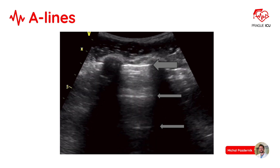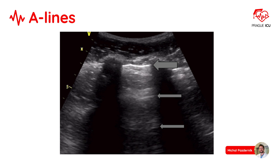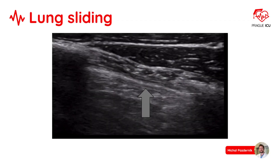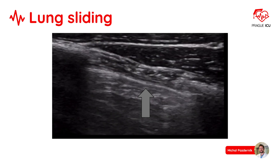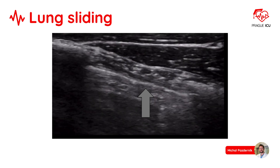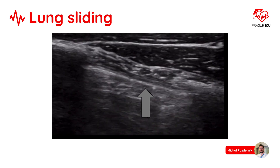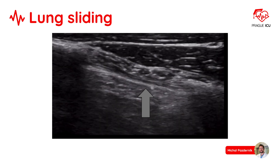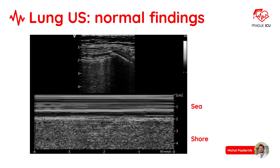A-lines are horizontal reverberation artefact lines originating from the visceral pleura. Lung sliding has been described as a shimmering appearance of the pleura, or like tiny ants marching on a string. Lung sliding represents sliding of the visceral over the parietal pleura. On M-mode, the classical sign of normally aerated lungs is the seashore sign.